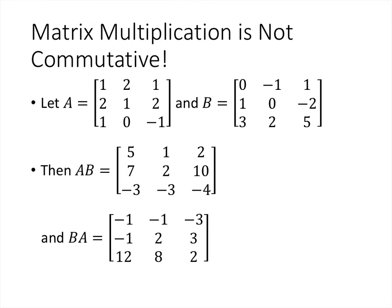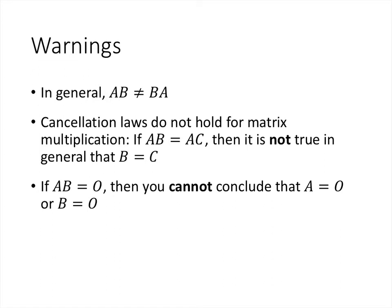Sometimes, occasionally, it will turn out that A times B equals B times A for specific matrices A and B, but in general it's not true. A couple of other things that don't work for matrices the way they do for numbers: cancellation. If AB equals AC, we cannot conclude that B equals C — we can't cancel the A from both sides. We can't divide by a matrix. Also, if you multiply two matrices and get the zero matrix, it's not in general true that one of the matrices has to itself be the zero matrix.